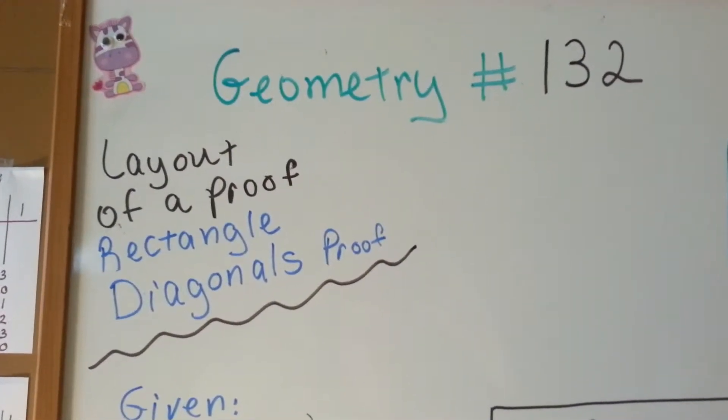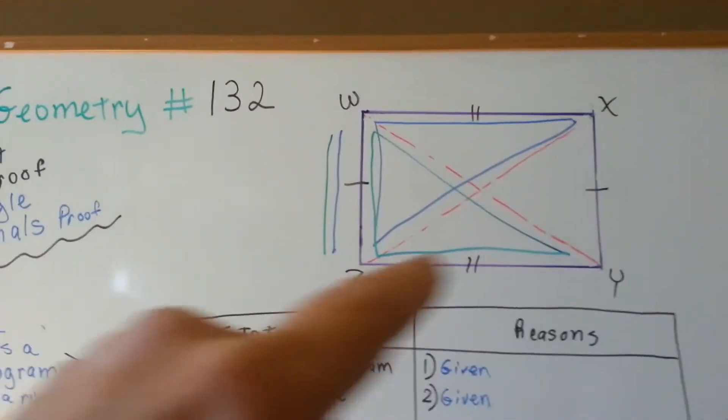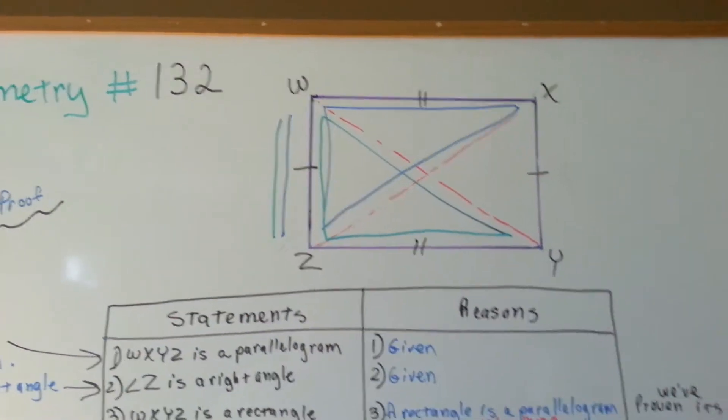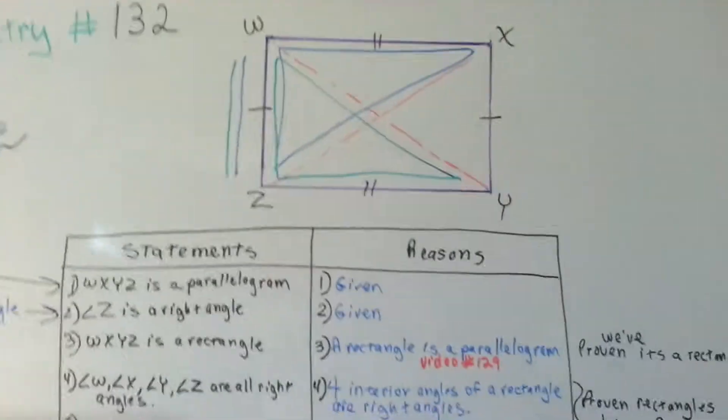Layout of a Proof, Rectangle Diagonals Proof. Okay, we have a rectangle here, and I know it's all drawn up, but imagine that it was empty. I've done all this work in it.